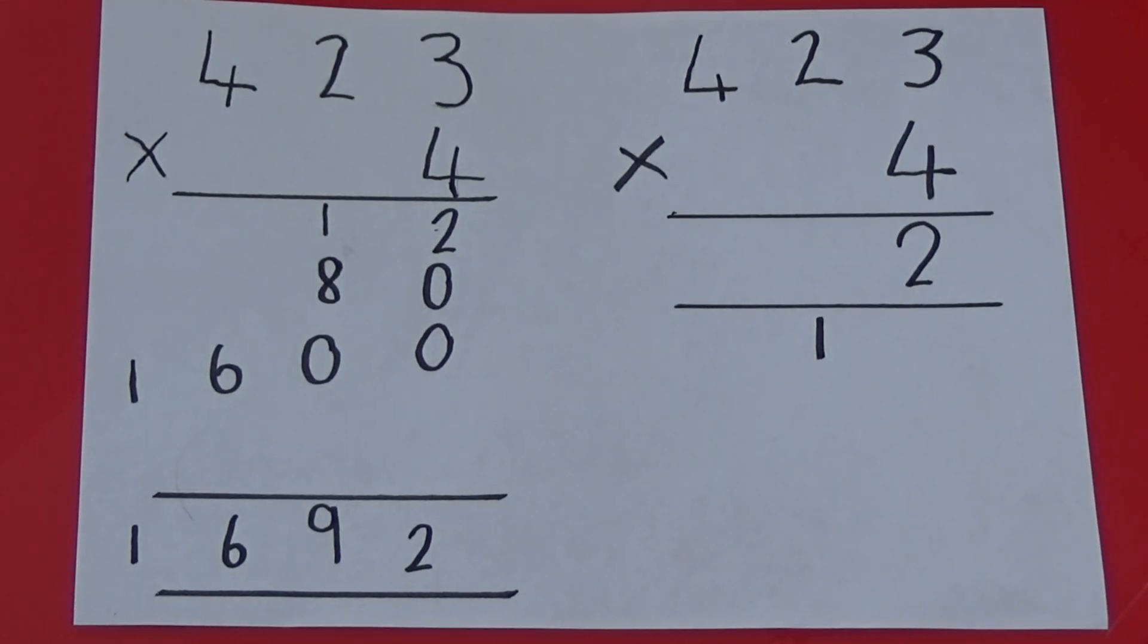We then need to work out 20 multiplied by 4, we know this is 80, and as we have 1 ten under the answer box, we also need to add that on. So, we have 90, I'm going to write 9 in the tens column.